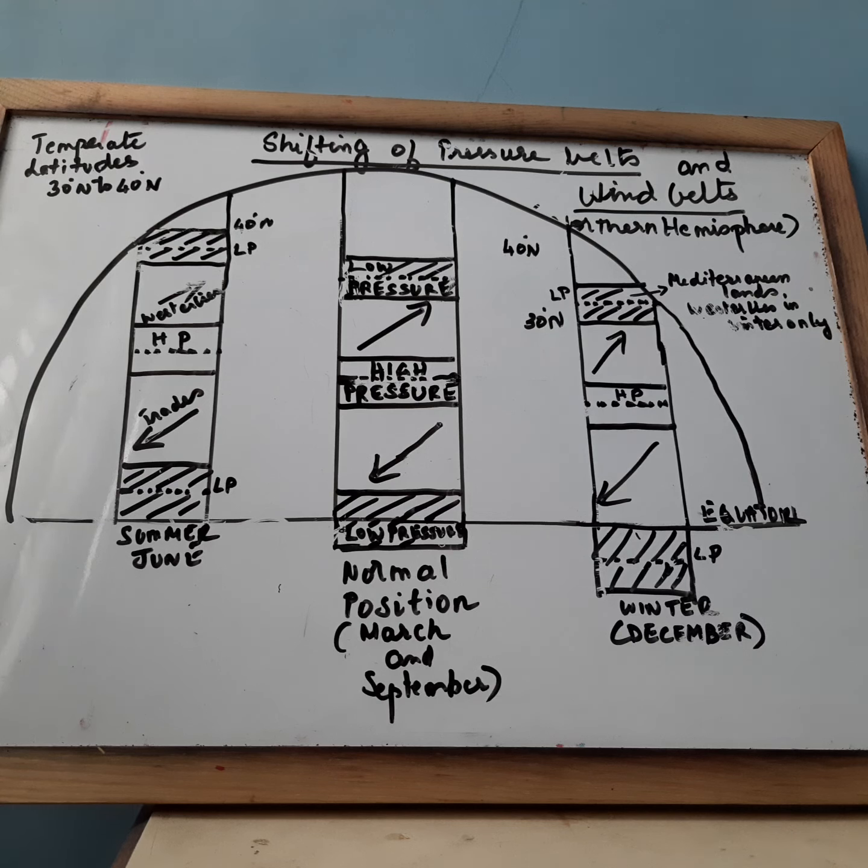Shifting of Pressure Belts and Wind Belts. This takes place in both the hemispheres, southern and northern hemispheres. This diagram represents what happens in the northern hemisphere.